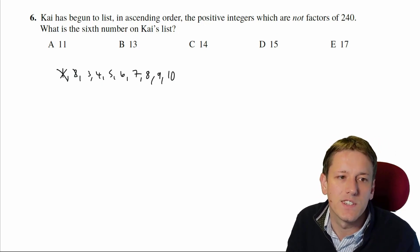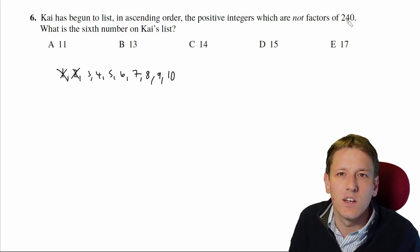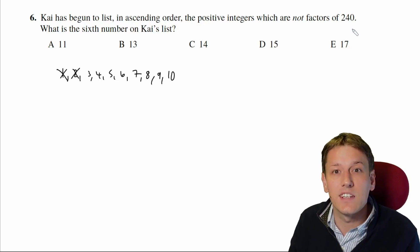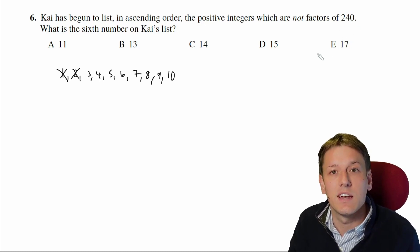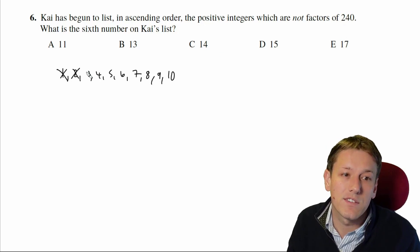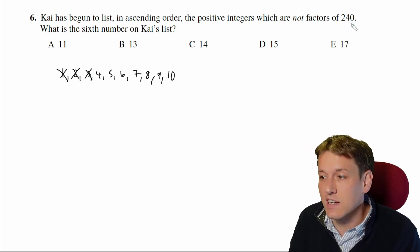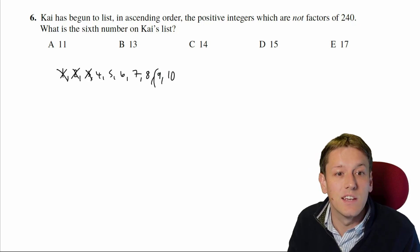1 is a factor of everything, it's obviously even, so 2 is a factor. We can see that 3 is a factor, remember the digit sum test that says that if you add the digits together and it's a multiple of 3, then 3 is a factor. That test works for 9 as well. 2 plus 4 is 6, that's not a multiple of 9, so actually 9 will be on Kai's list, it's not a multiple of 9.